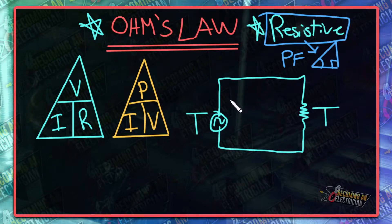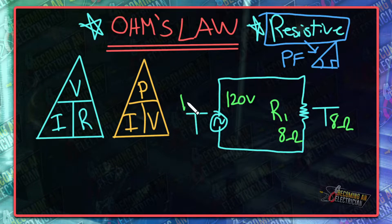Let's say our source is 120 volts. Let's say R1—this is a load, this is the source—let's say R1 is 8 ohms. All you do is enter in the values. We know R is resistance, so we'll put 8 ohms right here. We know our source is 120 volts, so we can enter in that value.